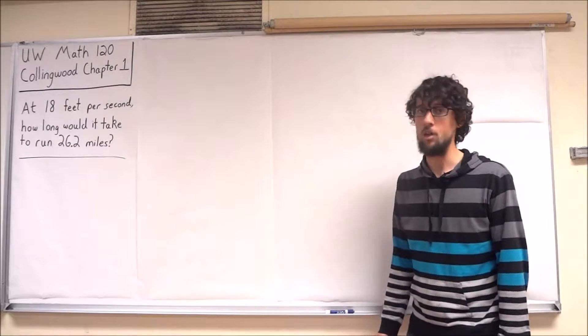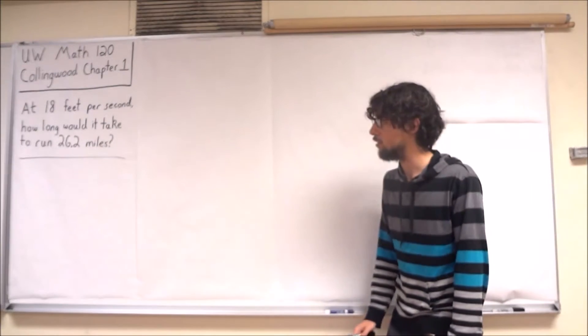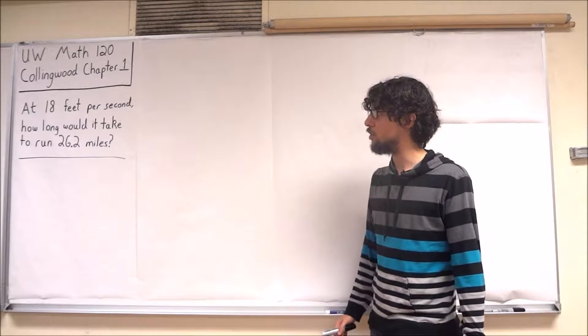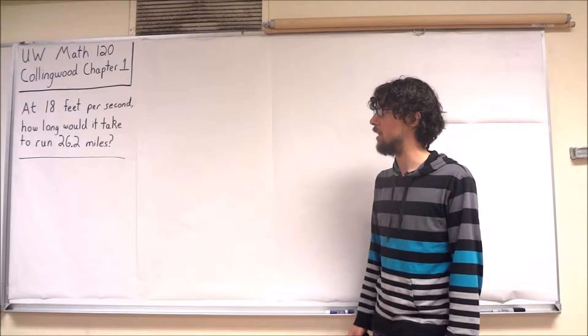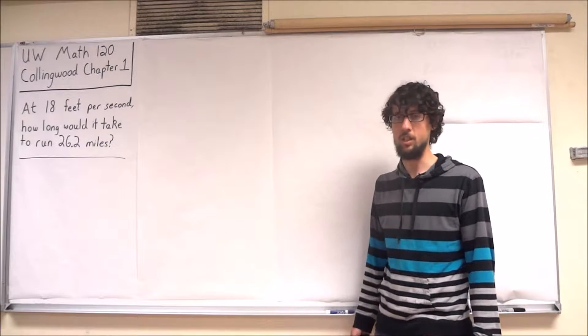So the very first problem in chapter 1 asks us to consider a marathon runner who, after the first mile, has clocked in at 18 feet per second. And the question is, if the marathon runner kept up this pace of 18 feet per second, how long would it take to run the 26.2 miles?